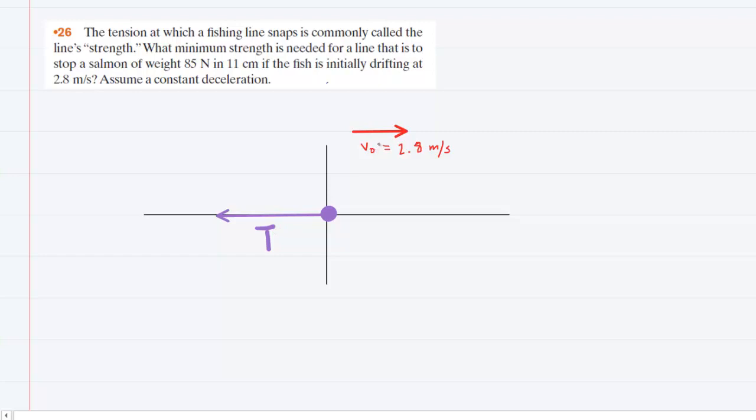We know the initial velocity of the fish is 2.8 meters per second, which we've shown pointing to the right. We're trying to stop this fish, so the final velocity is going to equal 0 meters per second. Furthermore, we're trying to stop the fish with a displacement of 11 centimeters, so delta x is equal to 0.11 meters. Notice we converted that by moving the decimal place two places to the left.